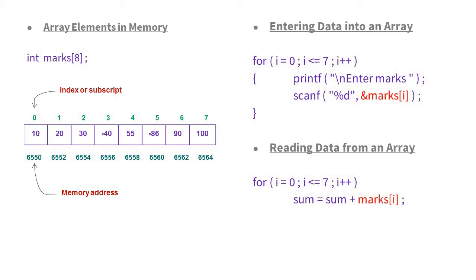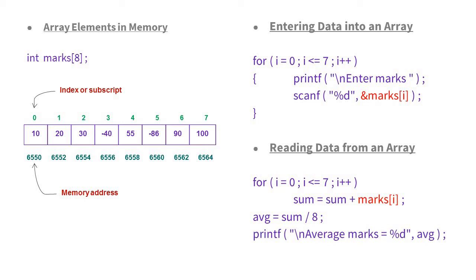I take one variable sum initialized to 0. Inside the for loop, sum = sum + marks[i]. As i increments from 0 to 7, it accumulates marks[0] through marks[7]. After i reaches 8 the condition becomes false and control exits the loop. Then average = sum / 8, and I print: average marks = %d with the average variable. This is how you read and write data from an array.